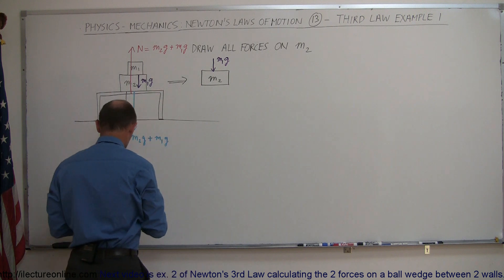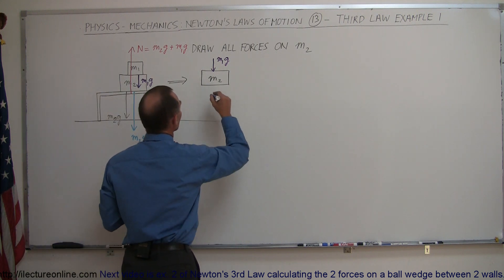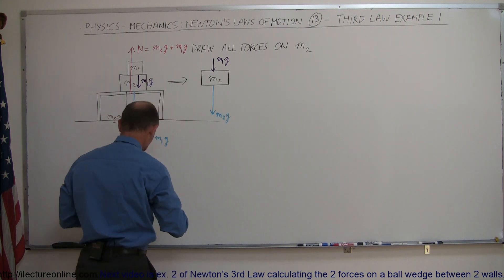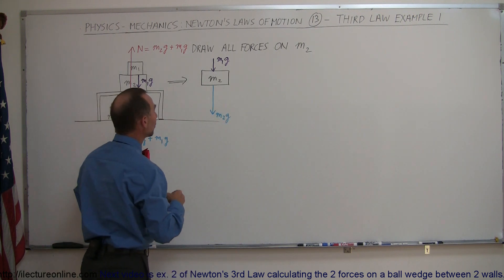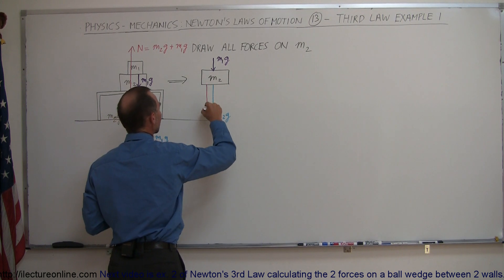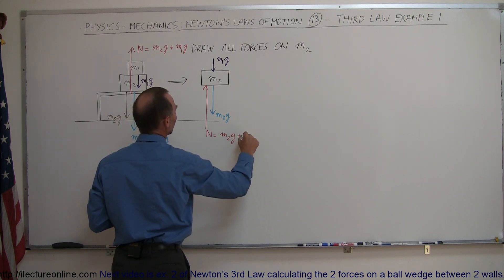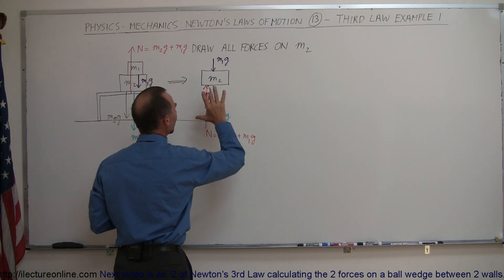So here we have the weight of m1 pushing down on m2, m1g. Here we have the weight due to gravity on m2g, and then we have the normal force pushing back like so. The normal force, which the magnitude of normal force is equal to m2g plus m1g.